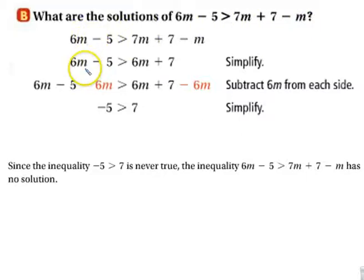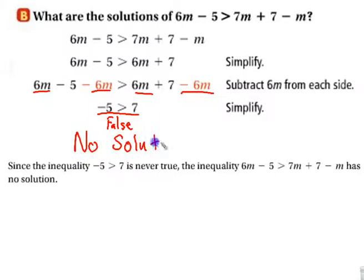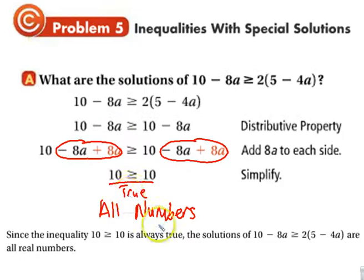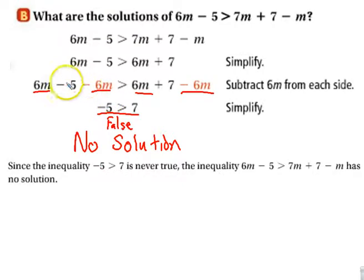Here's a different one. Look what happens with your M's—they cancel each other out. Look what's left. That is false, so this is a no-solution problem. When the variables cancel each other out and you're left with a true statement, all real numbers. If the variables cancel and you're left with a false statement, no solution. No value of M can be plugged in and have this be true.